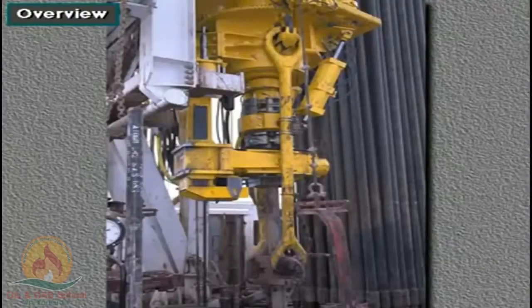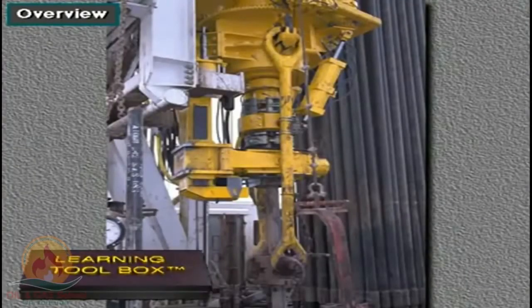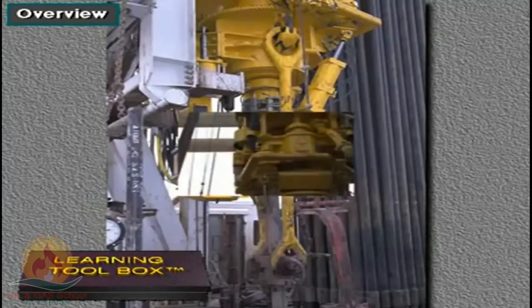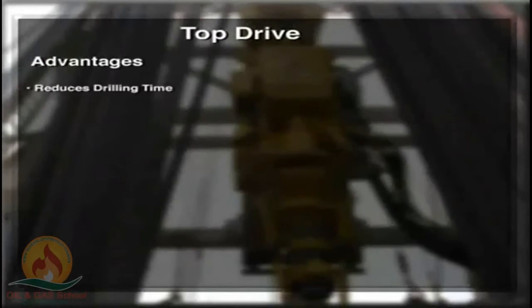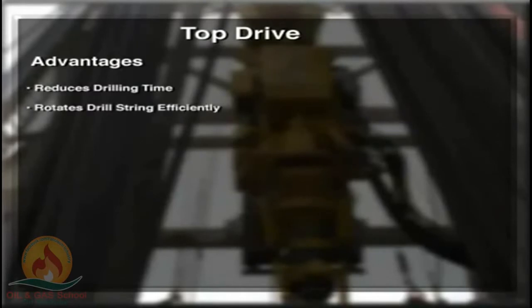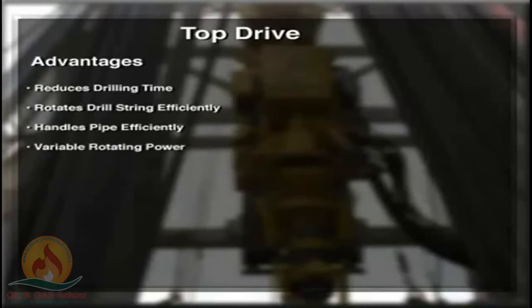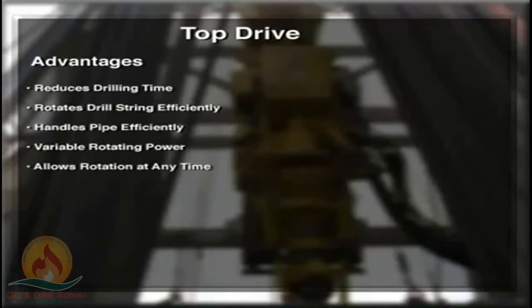With a top drive, the rotary table does not rotate the drill string. The most important benefit of a top drive is that it reduces drilling time. It also rotates the drill string more efficiently than a Kelly and rotary table system. Further, it handles stands of pipe more efficiently. A top drive system provides more variable rotating power than a rotary table, and allows drill string rotation and circulation at any point in the hole when tripping in, drilling, or tripping out.